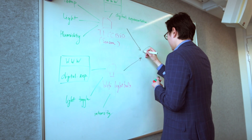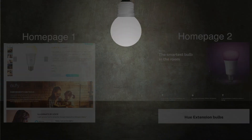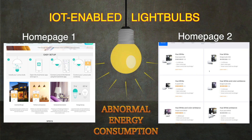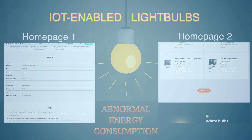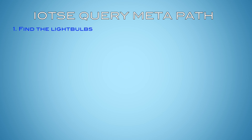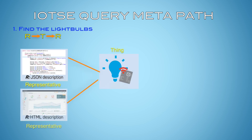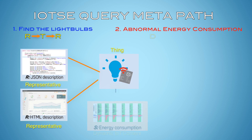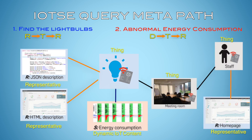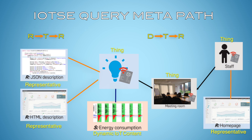To demonstrate how the MetaPath model works, let's say we're searching for home pages of IoT-enabled light bulbs with abnormal energy consumption. To process this query, two things need to happen. First, it needs to find the light bulbs — this MetaPath can be defined as follows. Next, it needs to narrow the list down to those light bulbs with abnormal energy consumption — this particular MetaPath can be defined as follows. If you combine these two queries into a single MetaPath, it becomes the following.